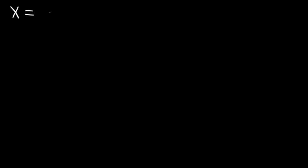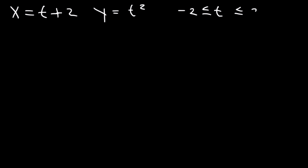In this video, we're going to focus on graphing parametric equations, and also we're going to talk about eliminating the parameter. So let's say that x is equal to t plus 2, and y is equal to t squared, and t is between negative 2 and positive 2.